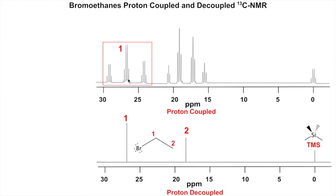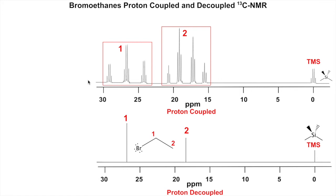When I allow the protons — the hydrogen nuclei — to couple, signal one comes up with a total of twelve peaks for just that one carbon. Signal two, instead of one signal, is also a total of twelve peaks — that quartet pattern. TMS is also a quartet because its carbons have three hydrogens on them, and three plus one gives four.